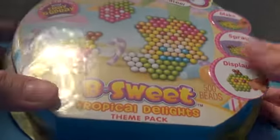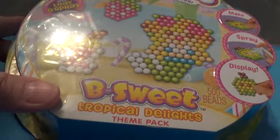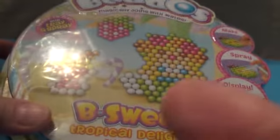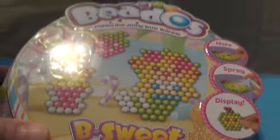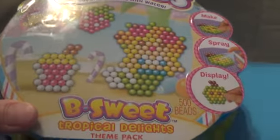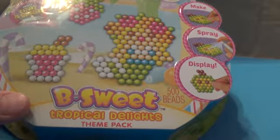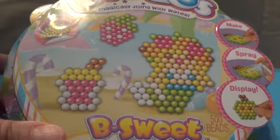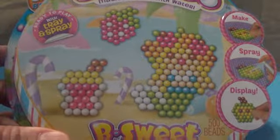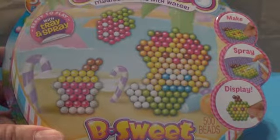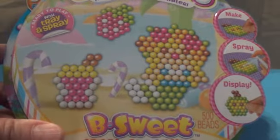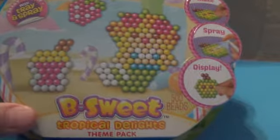Today we are going to have a really cool thing called Beedose. It magically joins with water and we're doing Be Sweet Tropical Delights. It comes ready to play and all you have to do is put them together and spray with water and they magically join.